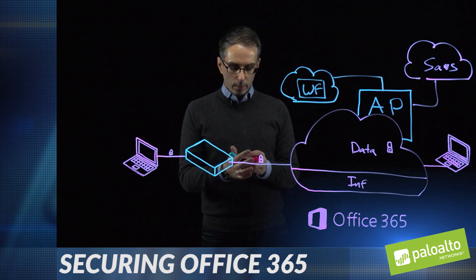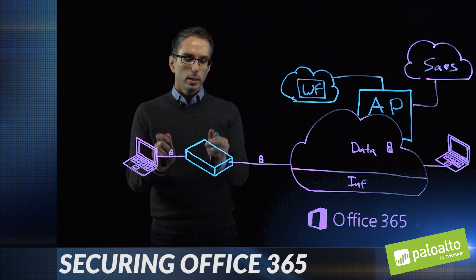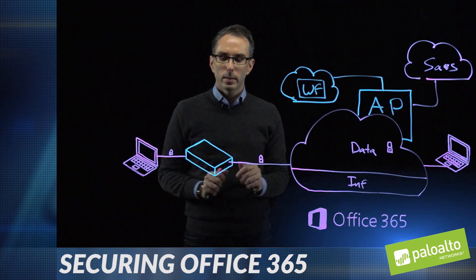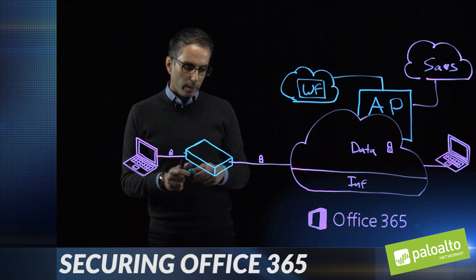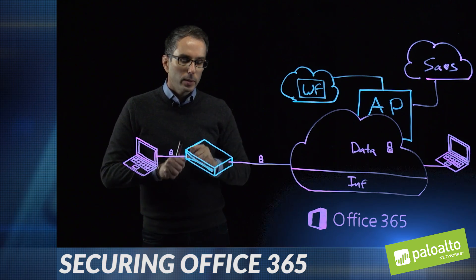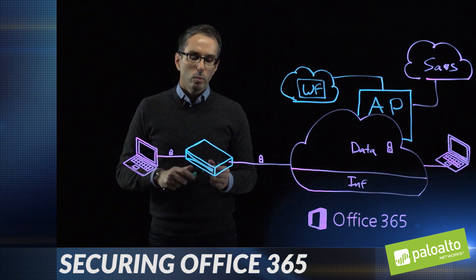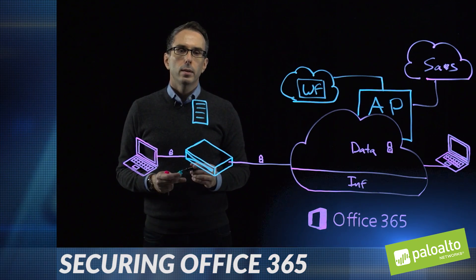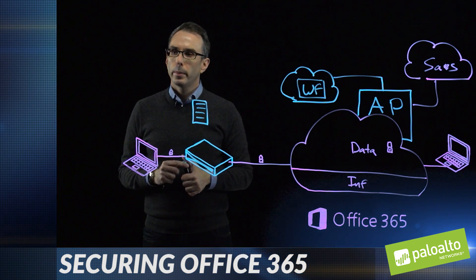The second piece is visibility into what's happening at the network level. We've solved the SaaS level — we know what's happening in SaaS — now we need to protect the network. With a next-gen firewall and the latest release of PAN-OS, we have a report that gives you full visibility into SaaS usage within Office 365 and all other SaaS applications. You can see what threats there are, what users are using them, how they're using them, top usage, and top applications — it's a great way to have visibility.